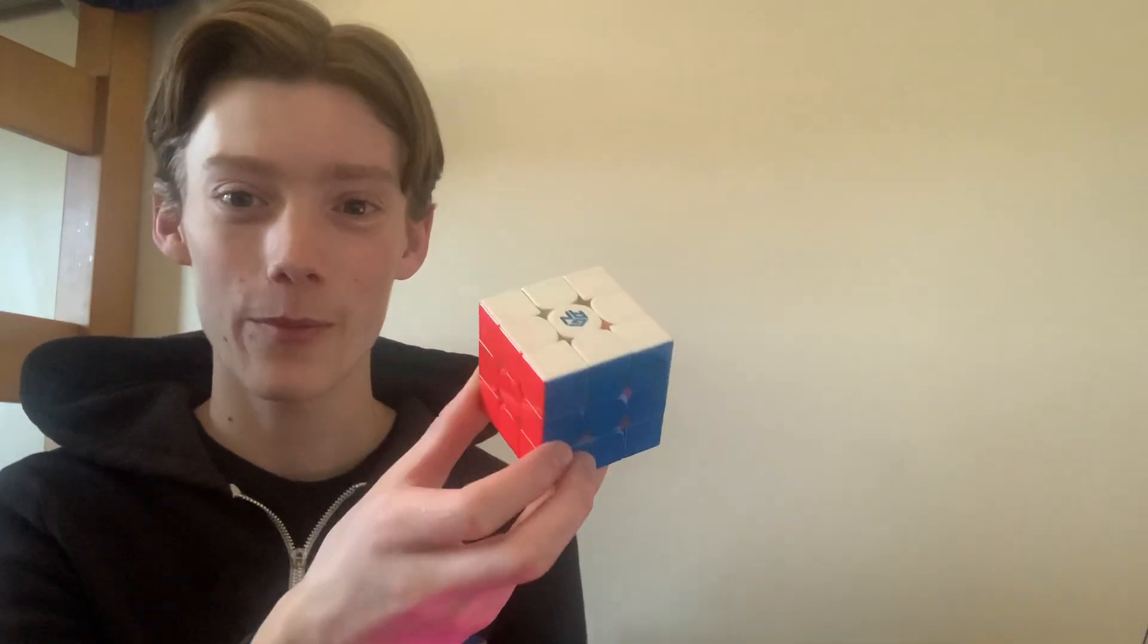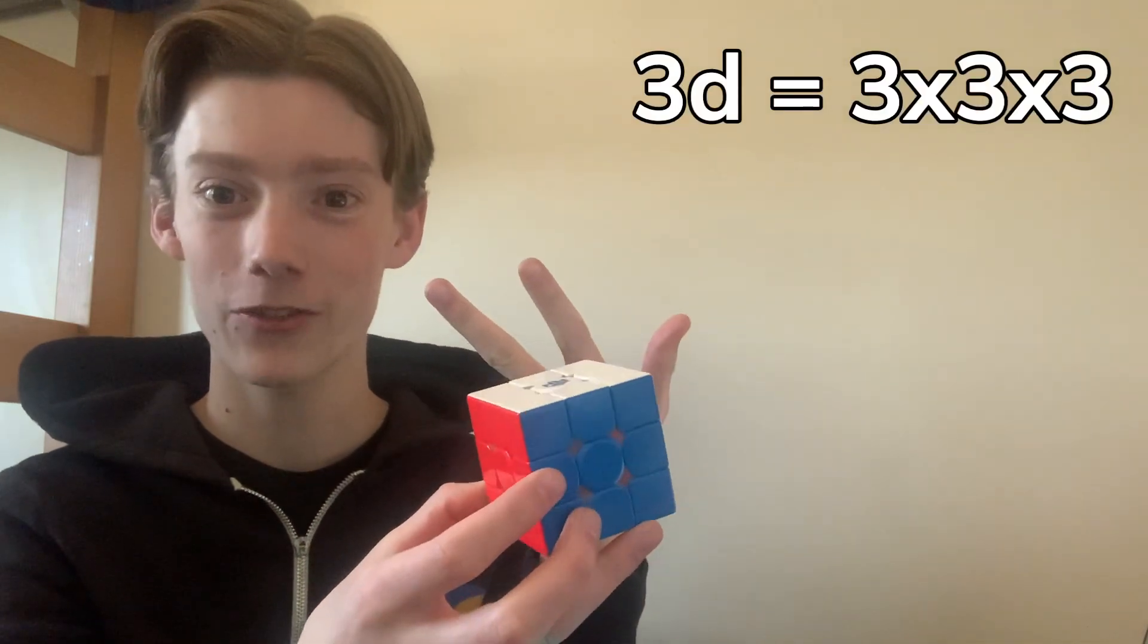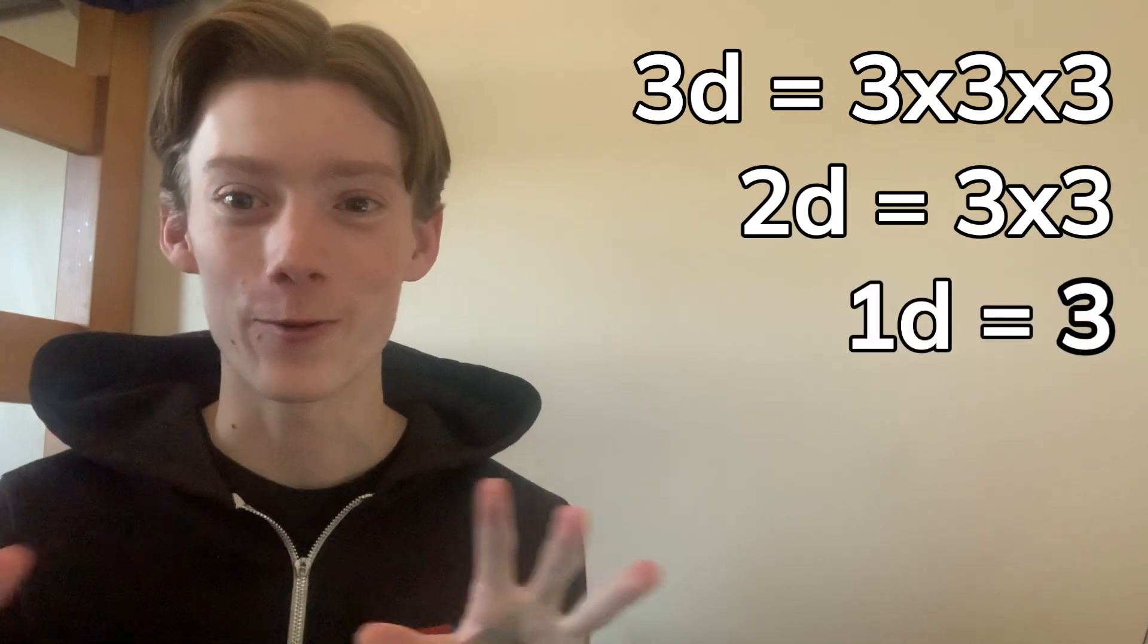So you know how the proper name for this is three by three by three because it's three-dimensional? So the two-dimensional is just three by three and then the one-dimensional Rubik's Cube is just three. But we can actually go even lower in the amount of dimensions.